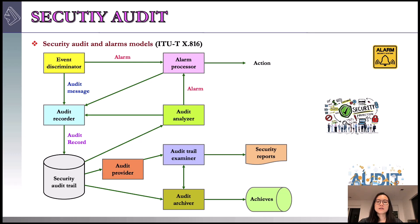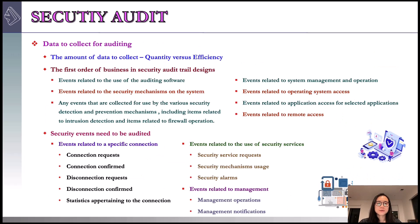The seventh element is archives. The security-related events are permanently stored on the audit archives of the system. The eighth element is audit provider. It is an application or user interface to the audit trail. Audit trail examiner is the ninth element and refers to an application or user who examines the audit trail and the audit archives for historical trends, for computer forensic purposes, or for other analysis. The last element is security reports. The audit trail examiner prepares human-readable security reports.